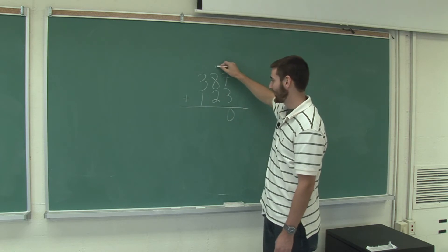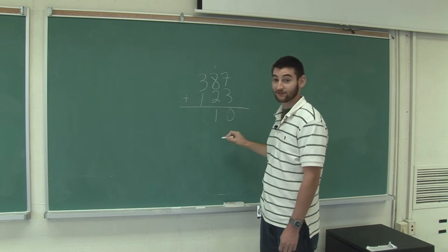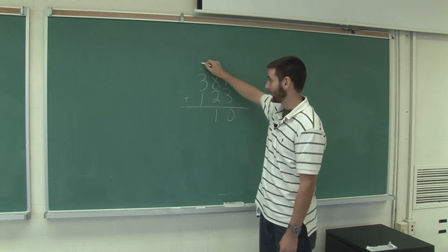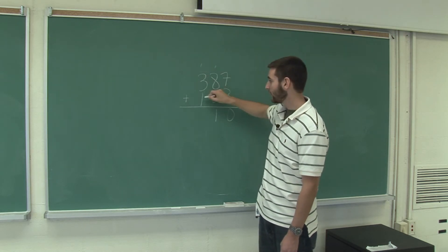So 8 and 1 is 9, plus 2 is 11. The second digit of 11 is 1 and we're going to carry the 1 again. 3 and 1 is 4, and 1 is 5.